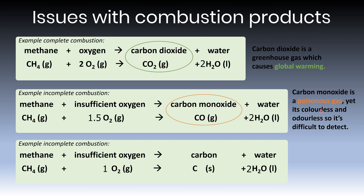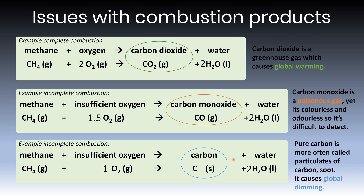Carbon particulates (soot), the other product of incomplete combustion, cause global dimming — effectively smog. Historic London during the Victorian era and industrial revolution suffered heavily from smog because factories pumped out large amounts of carbon particulates due to poor combustion efficiency and limited oxygen supply. Smog can cause all sorts of issues, particularly respiratory problems in humans and animals.